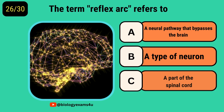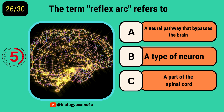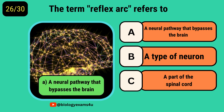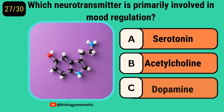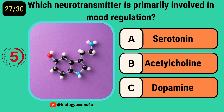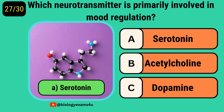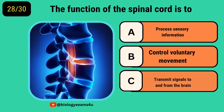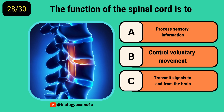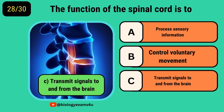The term reflex arc refers to? A neural pathway that bypasses the brain. Which neurotransmitter is primarily involved in mood regulation? Serotonin. The function of the spinal cord is to? Transmit signals to and from the brain.